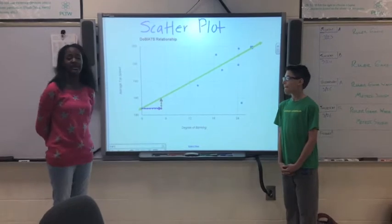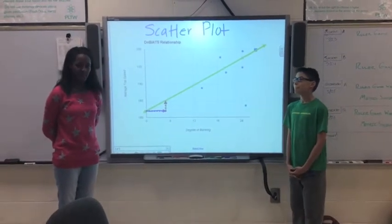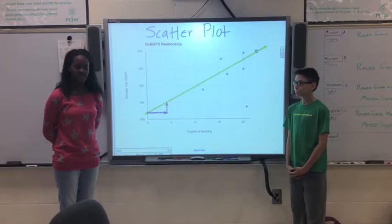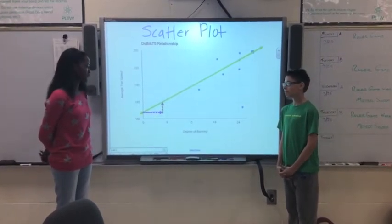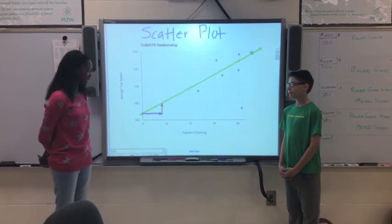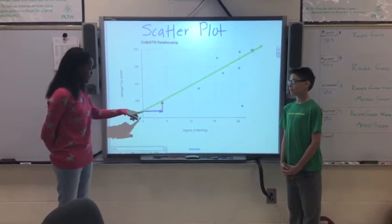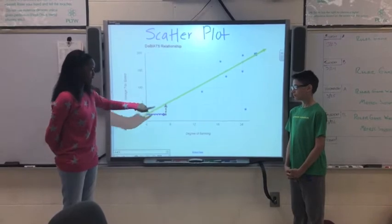And with the degree of banking and the average top speed, we came up with a line called the line of best fit, which organizes that our unit rate would be for every 5 degrees there would be 3 miles per hour.